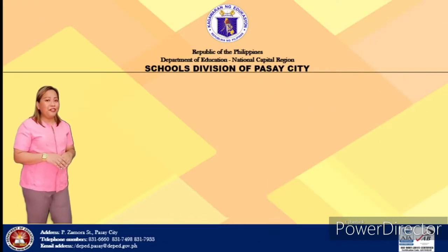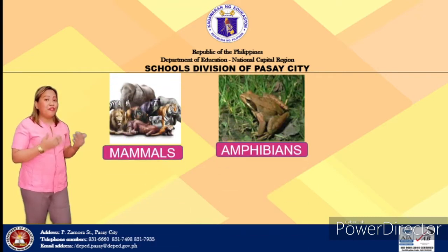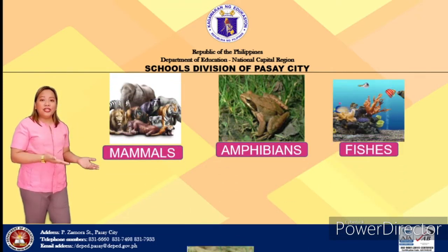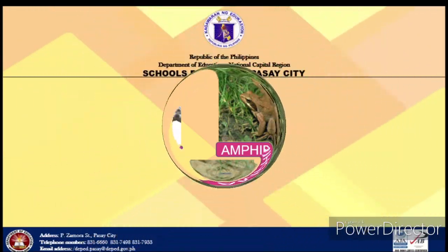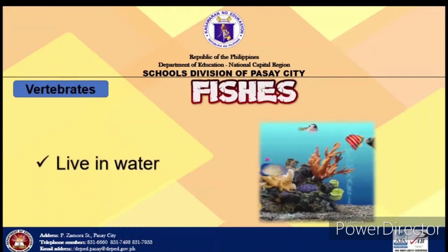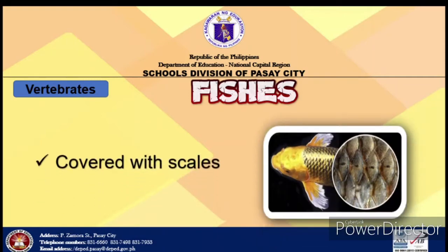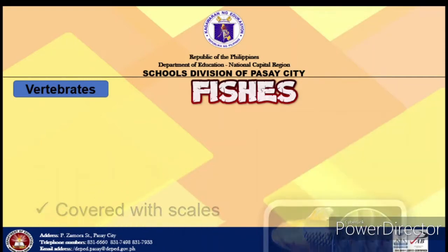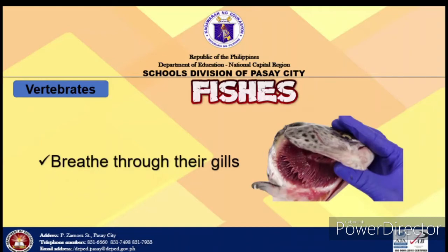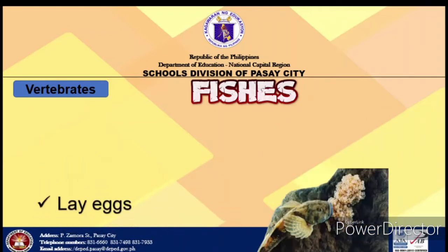Scientists classified vertebrates into five groups: mammals, amphibians, fishes, reptiles, and birds. Fishes live in water. They are cold-blooded animals, which means their temperature changes depending on the temperature of their surroundings. They have a body shape adapted for living and moving in aquatic habitats. Their bodies are protected with scales and they breathe through their gills. They undergo external fertilization, which means they lay eggs.